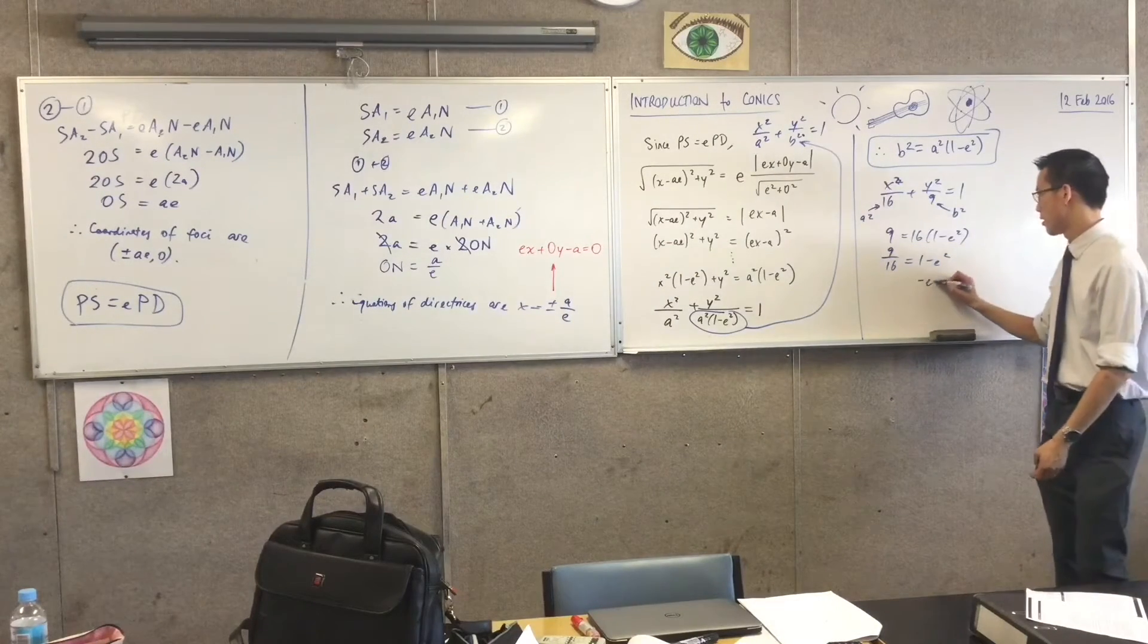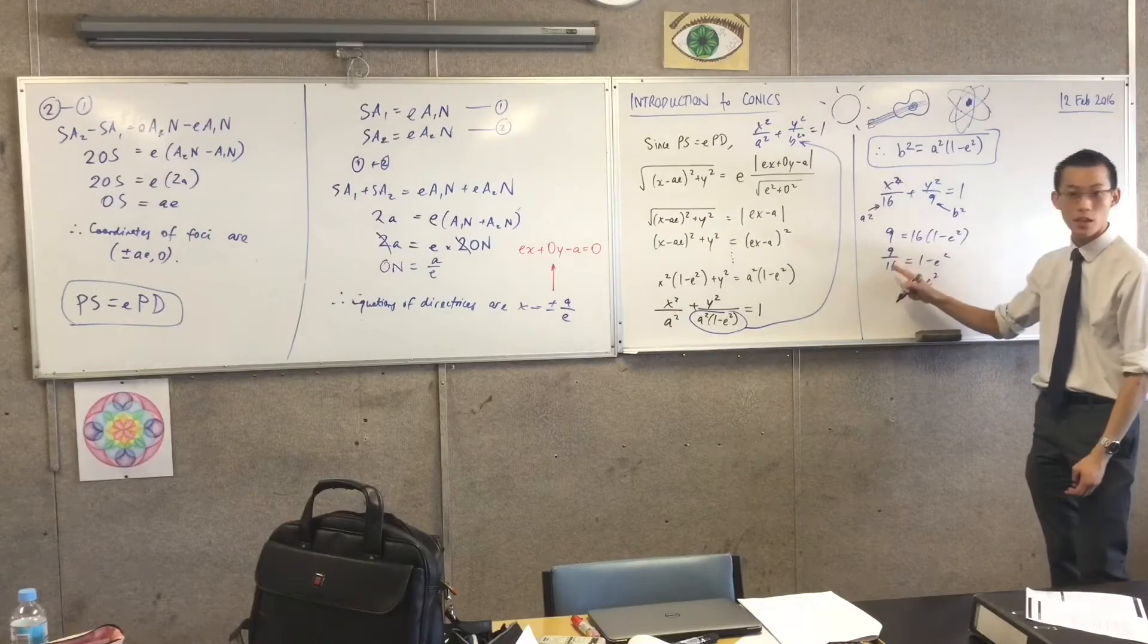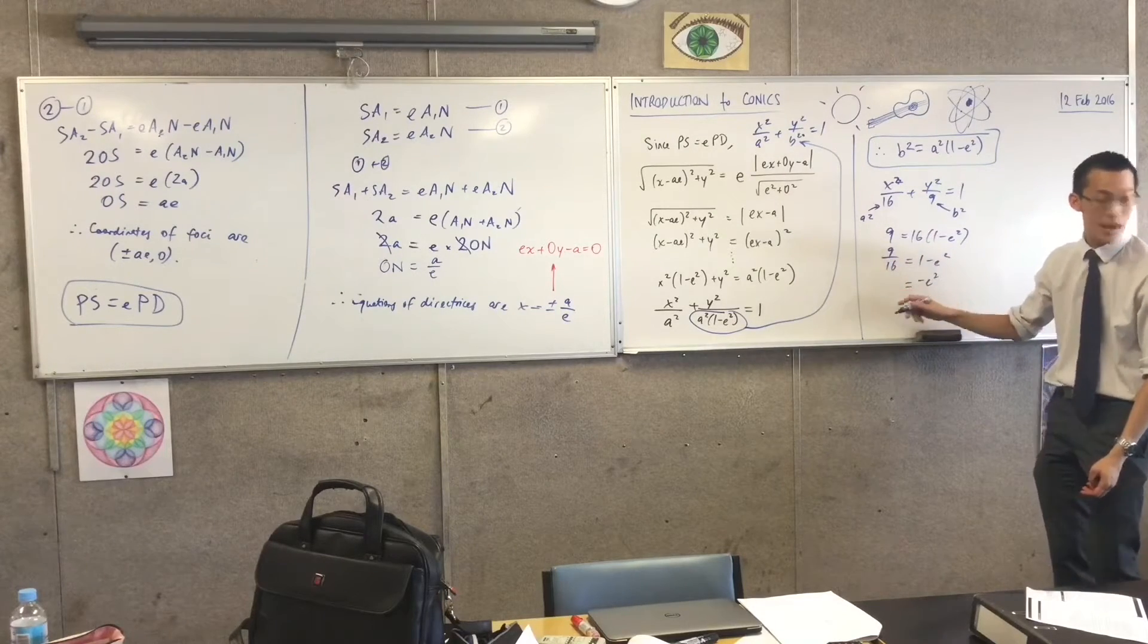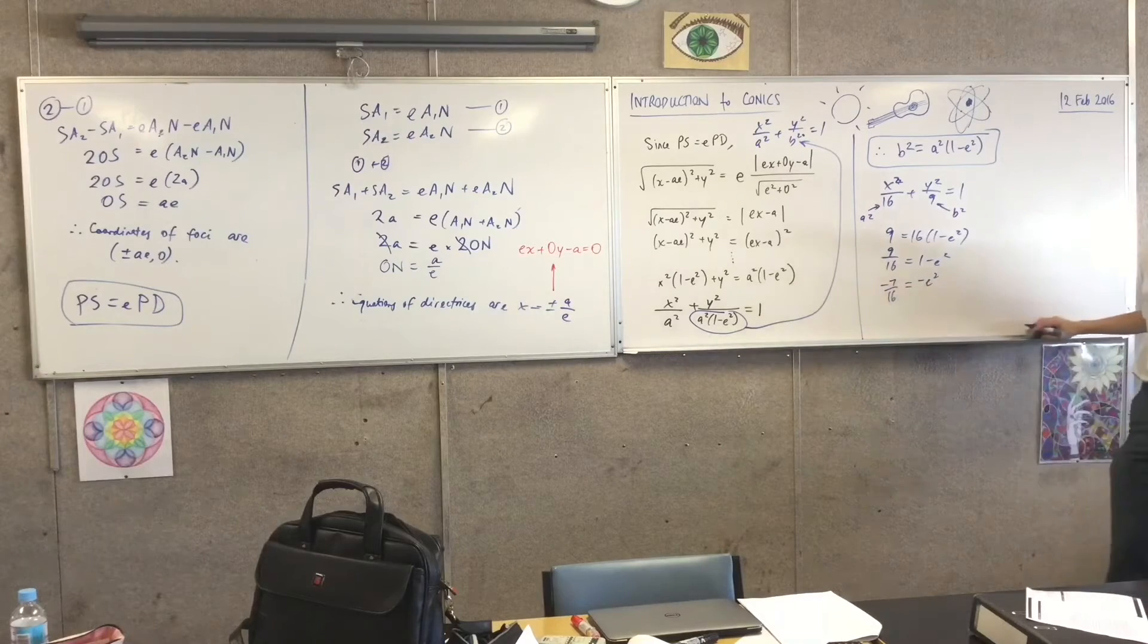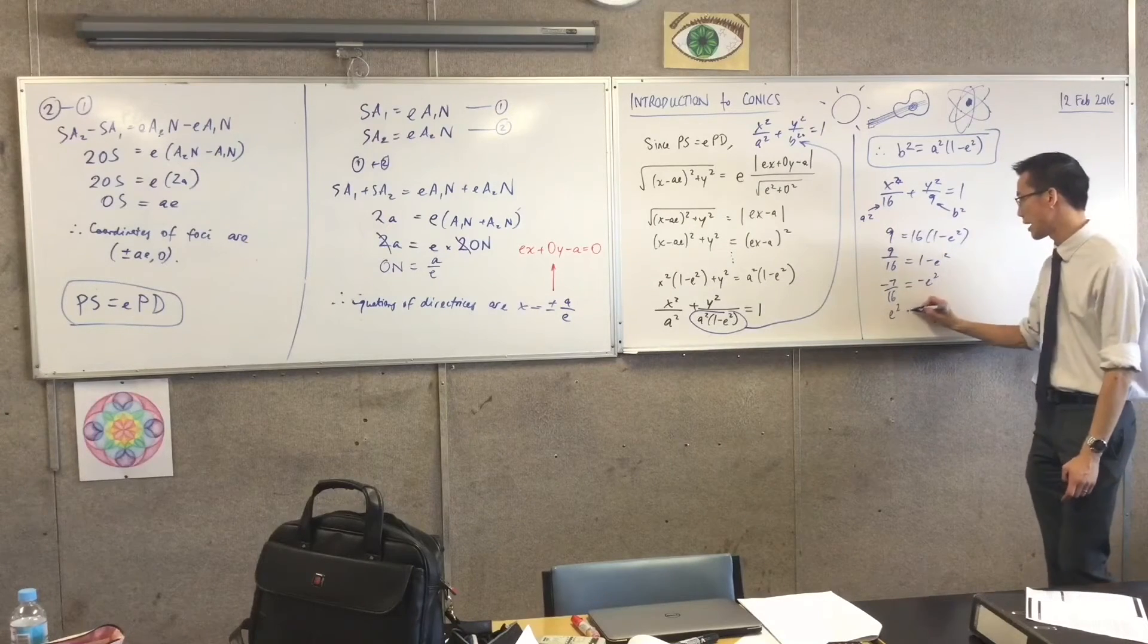And then flip it. So this is going to become negative 7 on 16, and I've got a double negative on both sides.